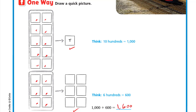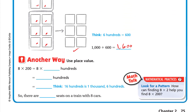One thousand plus six hundred is one thousand six hundred. Another way is to use place value. Keep the 8, and write 2 hundreds. Multiply 8 by 2: eight times two is 16, so it's 16 hundreds. Tens means one zero, hundreds means two zeros, thousands means three zeros — so 16 hundreds equals 1,600. There are one thousand six hundred seats on a train with eight cars.